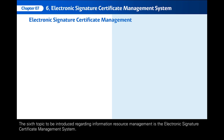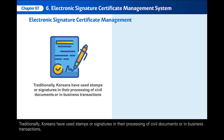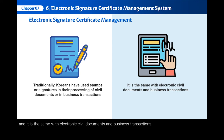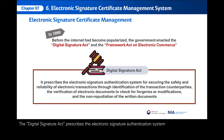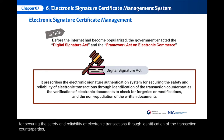The sixth topic to be introduced regarding information resource management is the Electronic Signature Certificate Management System. Traditionally, Koreans have used stamps or signatures in their processing of civil documents or in business transactions, and it is the same with electronic civil documents and business transactions. In 1999, before the Internet had become popularized, the government enacted the Digital Signature Act and the Framework Act on Electronic Commerce. The Digital Signature Act prescribes the Electronic Signature Authentication System for securing the safety and reliability of electronic transactions through identification of the transaction counterparties, the verification of electronic documents, the verification of electronic documents to check for forgeries or modifications, and the non-repudiation of written documents.